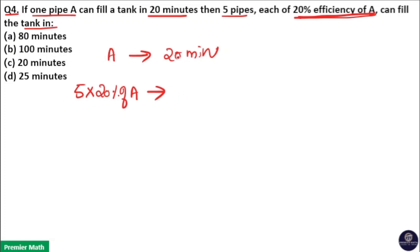Here A can fill a tank in 20 minutes means this is 100% efficiency. So here 5 into 20 is also 100%. That means this will also take 20 minutes because this is 100% of A.